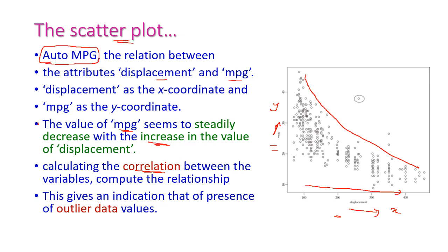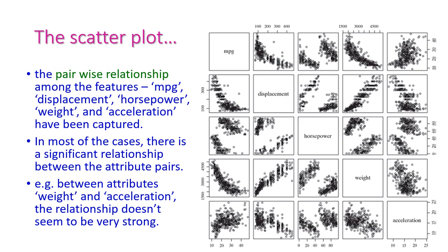The scatter plot diagram is also used to indicate outlier data — data points not included inside the main region are outliers. This diagram explains the pair-wise relationship among the features: MPG, displacement, horsepower, weight, and acceleration. We can see the relationship between MPG and displacement, and most of the attributes are related to each other. For example, weight and acceleration are related to each other, and simultaneously MPG and displacement are also related to each other.